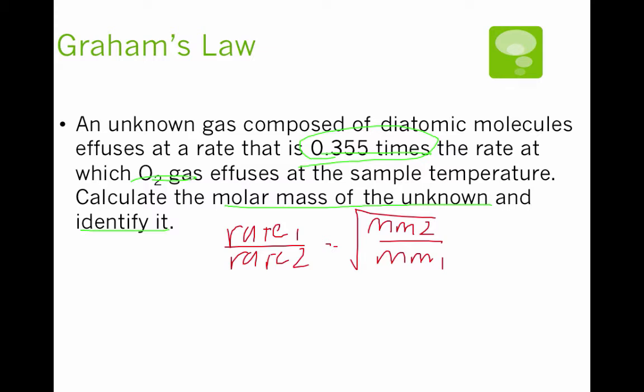So now let's plug in some numbers that we know. We know that an unknown gas effuses at a rate that is 0.355 times the rate. So I'm going to say rate 1 is my unknown, rate 2 is my O2. Because we know that rate 1 is essentially 0.355 times that. So if that's 1, my unknown would be 0.355 times that. And that's equal to molar mass of gas 2, which we said was the oxygen. So that's 32 grams per mole over X.